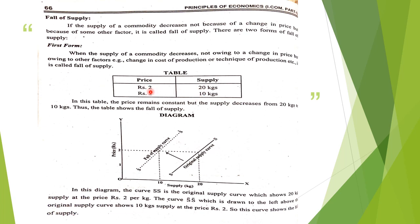Now for fall in supply: when the price was 2, supply was 20. The price remains the same but supply has reduced to 10. When price was 2 and quantity was 20, we draw supply curve SS at that point. Now the price is the same but quantity is 10 — the new point gives us supply curve S-dash. This means supply has fallen. Thank you.